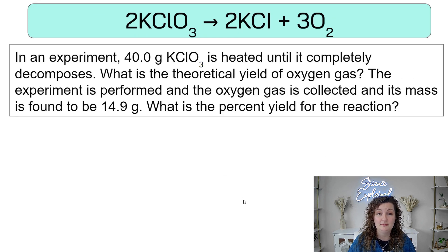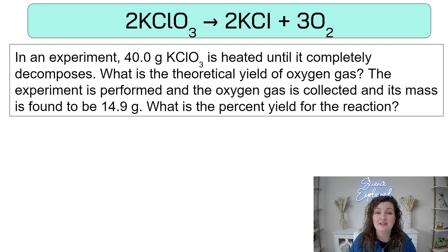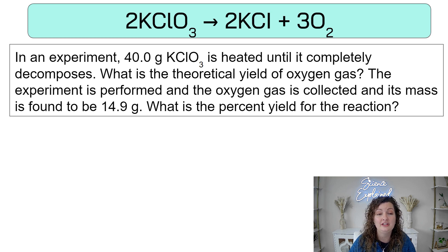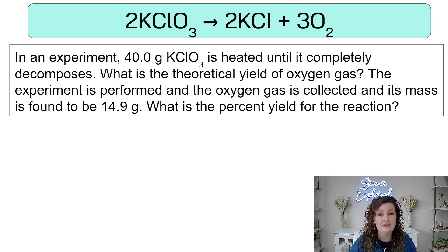So let's go ahead and look at a couple of problems. First, you need to look at your chemical reaction and see if it's balanced. This equation is balanced, so we're good to go. If it isn't, you need to balance it — I'll link a video on how to balance chemical equations down below. So let's go ahead and look at our question. In an experiment, 40 grams of KClO3 is heated until it completely decomposes. What is the theoretical yield of oxygen gas? The experiment is performed and the oxygen gas is collected and its mass is found to be 14.9 grams. What is the percent yield for the reaction? So they're asking us a lot here, but first let's dissect what we have.